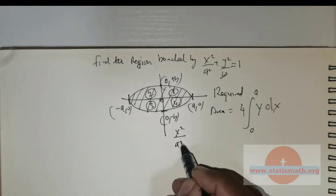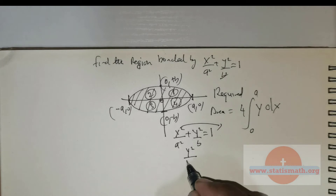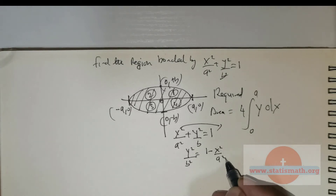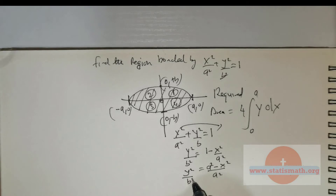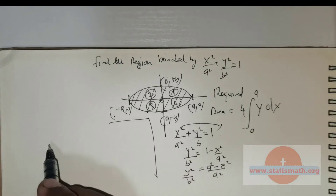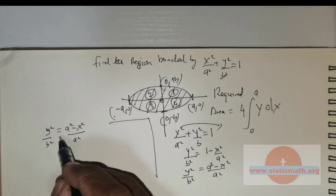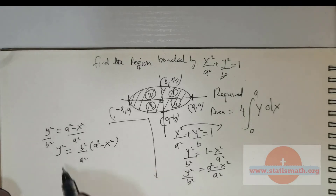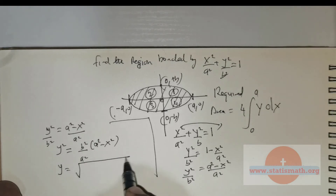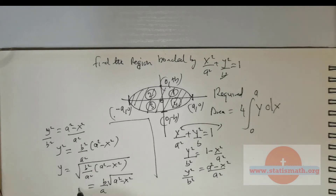Now, you have x squared divided by a squared plus y squared divided by b squared is equal to 1, so you need to write it for y. Move this term, so y squared divided by b squared is equal to 1 minus x squared divided by a squared. Taking a squared as the LCM gives a squared minus x squared. So y squared divided by b squared equals a squared minus x squared divided by a squared. Cross multiplying gives y squared equals b squared divided by a squared times (a squared minus x squared). Taking the square root, y equals b divided by a times the square root of a squared minus x squared.